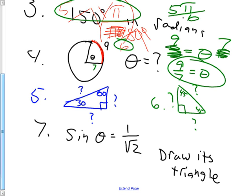Get used to the idea of an answer that doesn't have degrees on it. It's just 9 sevenths of a radian, which is like 1-point-something radians — radians are about 60 degrees each. 9 sevenths was right. For numbers five and six, you should know these like the back of your hand: 1, 2, square root of 3, and 1, 1, square root of 2.